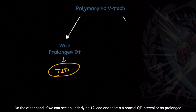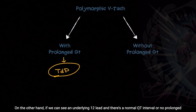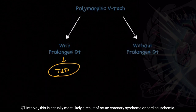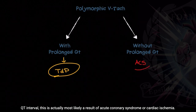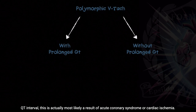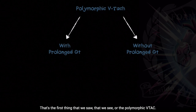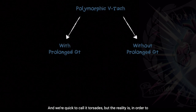It's a French term. On the other hand, if we can see an underlying 12-lead and there's a normal QT interval — no prolonged QT interval — this is actually most likely a result of acute coronary syndrome or cardiac ischemia. A lot of times in EMS, we see the patient run immediately into that torsades — that's the first thing we see — or the polymorphic VTAC, and we're quick to call it torsades. But the reality is, in order to formally diagnose torsades, we need to see an underlying 12-lead.